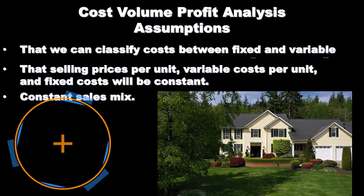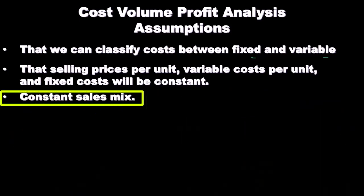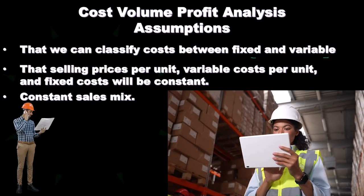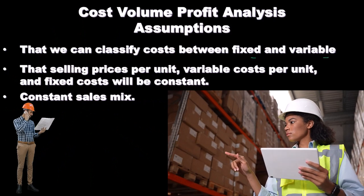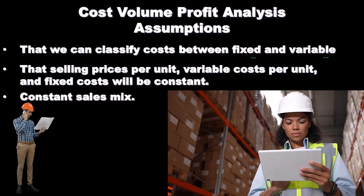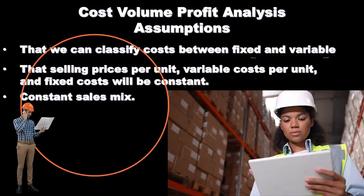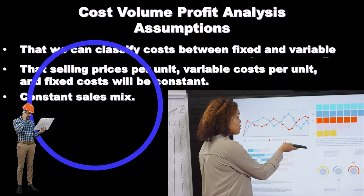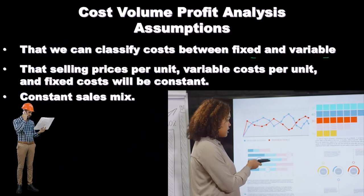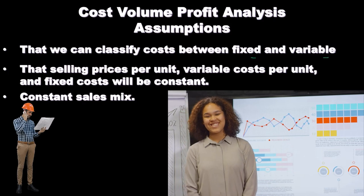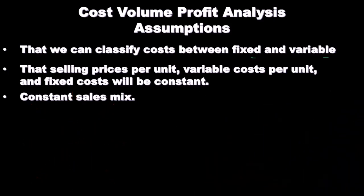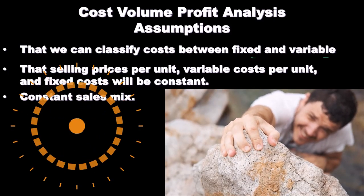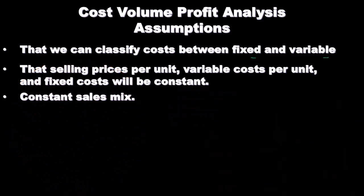Then we have a constant sales mix. If we have different inventory items and we're figuring out CVP analysis, we're considering a constant ratio at which we sell our inventory so we can apply this systematic numerical method. The sales mix changing could be a significant factor — we might sell a lot more of one product than another, and if we don't know what the sales mix is, it's going to be difficult to assume a consistent sales mix in order to figure out the cost volume profit analysis.